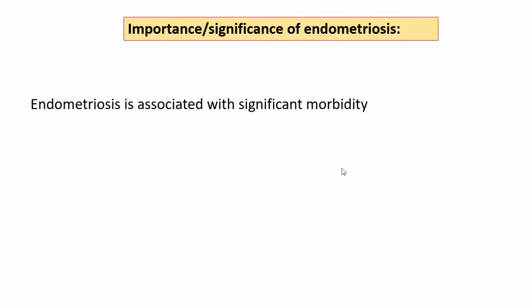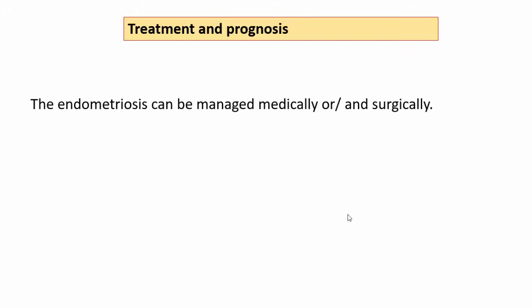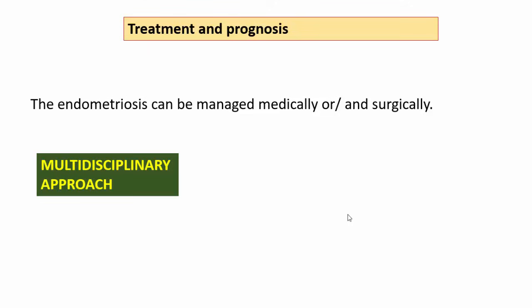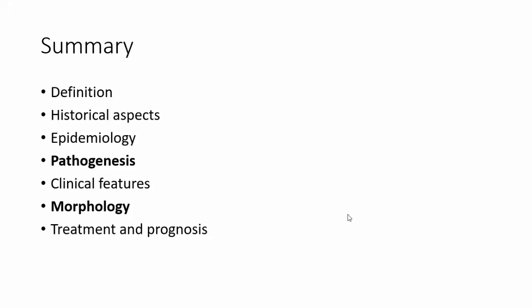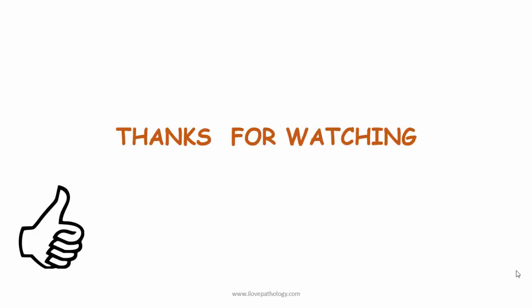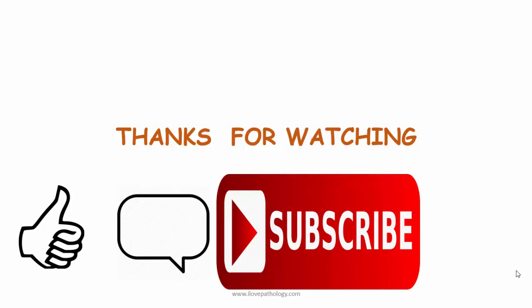What is the significance of endometriosis? Endometriosis is associated with significant morbidity and decreased quality of life. There are extremely rare chances of these endometriotic foci undergoing malignant transformation. Regarding treatment and prognosis, endometriosis can be managed medically and/or surgically. It needs a multidisciplinary approach, but there is a high rate of recurrence and it cannot be cured completely. That is all about endometriosis — covering definition, historical aspects, epidemiology, pathogenesis, clinical features, and morphology. Thanks for watching.